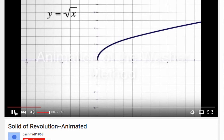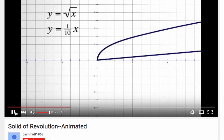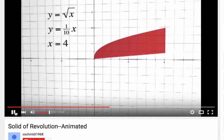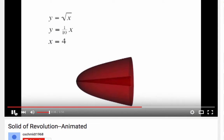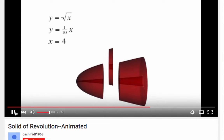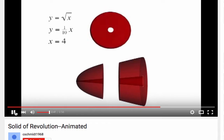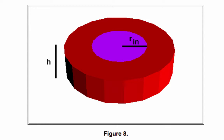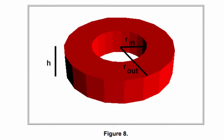Here's an illustration: y = √x and y = (1/10)x, bounded by x = 4, is the region we revolve around the x-axis. You can see the resulting shape. If we look at a little slice, it looks like a washer. In essence, we use the outer radius and subtract the inner radius to hollow out the final shape.